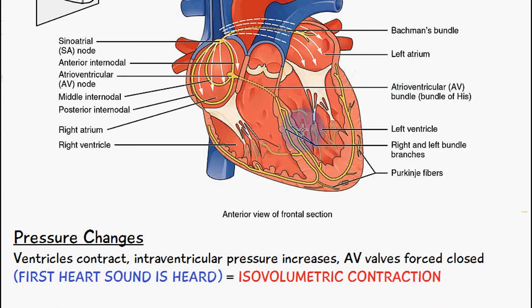When the ventricles contract, the pressure inside the ventricles — the intraventricular pressure — will increase. This increase in pressure will cause the atrioventricular valves to be forced closed, and once they close they cause the first heart sound.